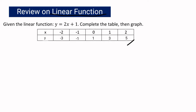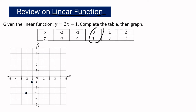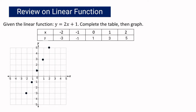This is our Cartesian plane. Let us plot the first point: negative 2 and negative 3. The second point is negative 1 and negative 1. Then we have 0 and 1, followed by 1 and 3, and the last point is 2 and 5. If we connect all the points, that will be the graph of the linear function.